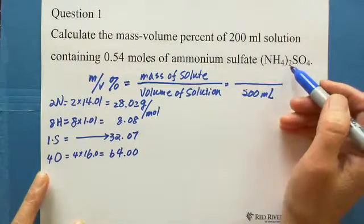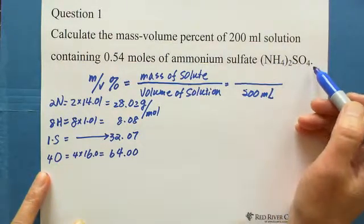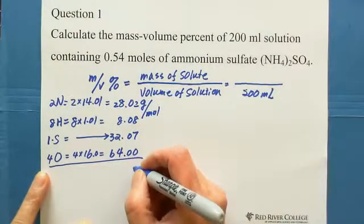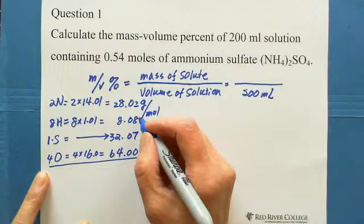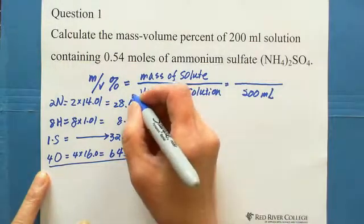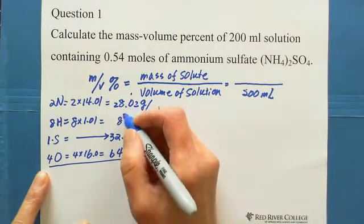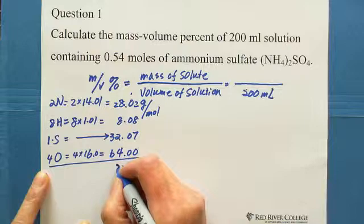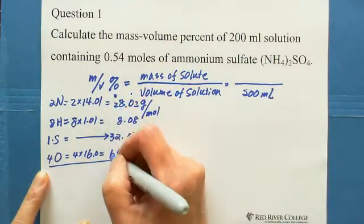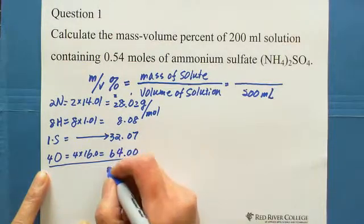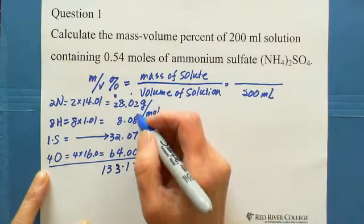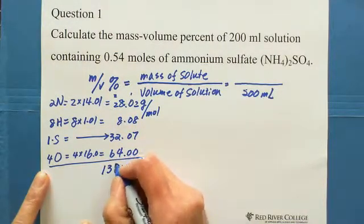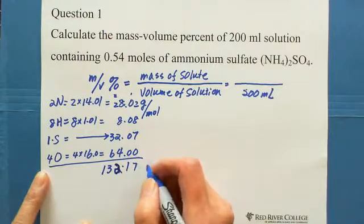Adding together 2 nitrogen, 8 hydrogen, 1 sulfur, and 4 oxygen gives the total molar mass for ammonium sulfate: 28.02 + 8.08 + 32.07 + 64.00 = 132.17 grams per mole.